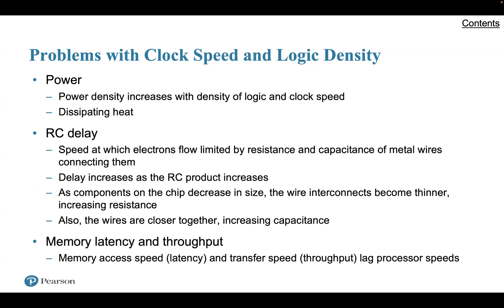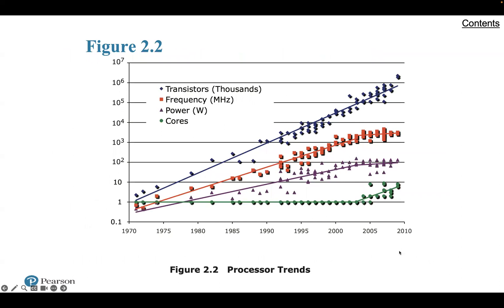Third, memory latency and throughput: memory access speed — that is, latency and transfer speed (throughput) — lag processor speeds as previously discussed. Thus there will be more emphasis on organizational and architectural approaches to improve performance. Here is a figure showing processor trends over time: the number of transistors is increasing, processor frequency is increasing, power is increasing, and the number of cores is increasing. We can see that clock frequency is starting to flatten out, and as a compensation, the number of cores has been increasing.